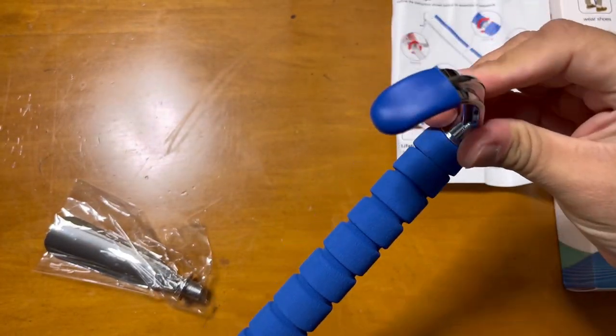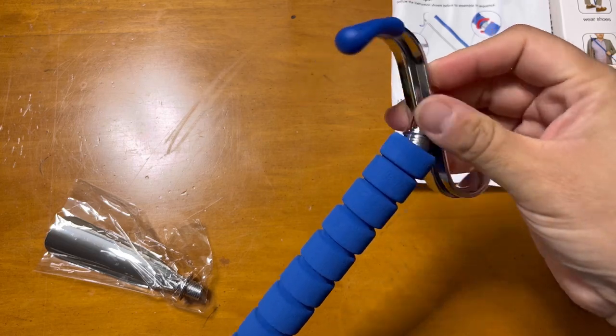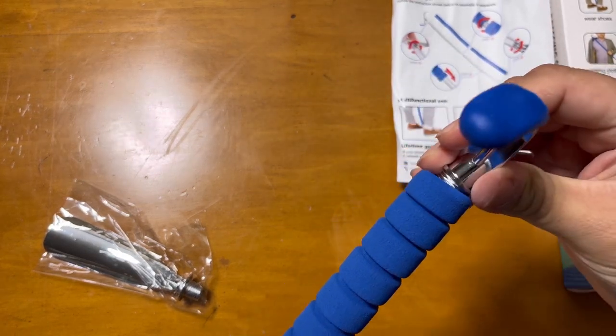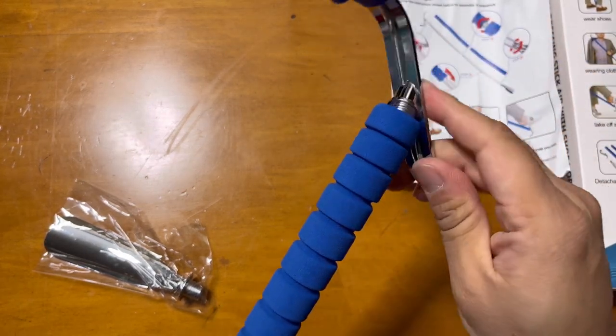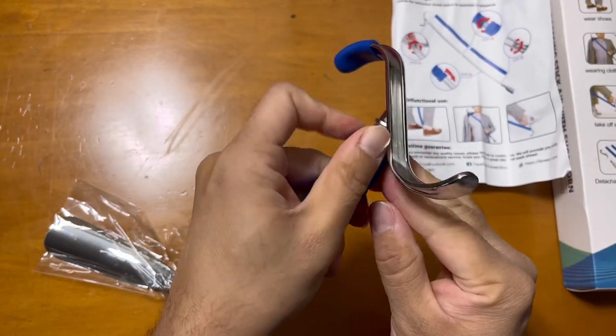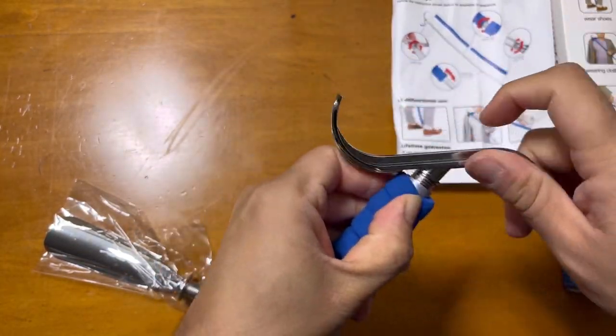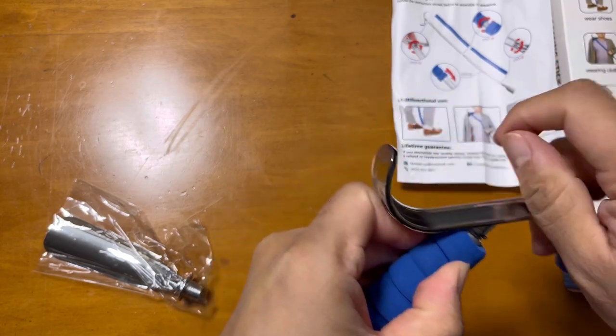One side is for socks or cloth things. You need to be careful because you can push this foam thing a little bit back and then use it. This will be easier to do it that way.